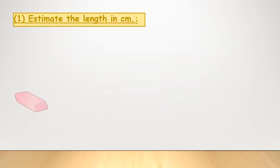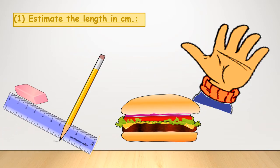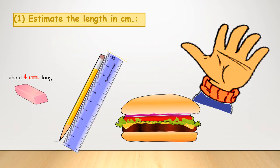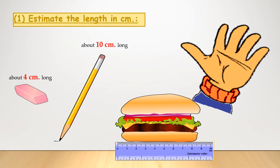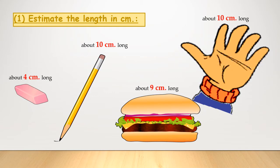Exercise number one, estimate the length in centimeters. You can use your ruler to estimate rightly. Our radiography puts the 0 at the start of this rubber and it ends at 4. Then it's about 4 centimeters long. This pencil, put your ruler, begin from 0 and count up to 10. It's about 10 centimeters long. This sandwich, put your ruler, start from 0 and it's about 9 centimeters long. And your benchmark, put your ruler, start from 0 and it's about 10 centimeters long.